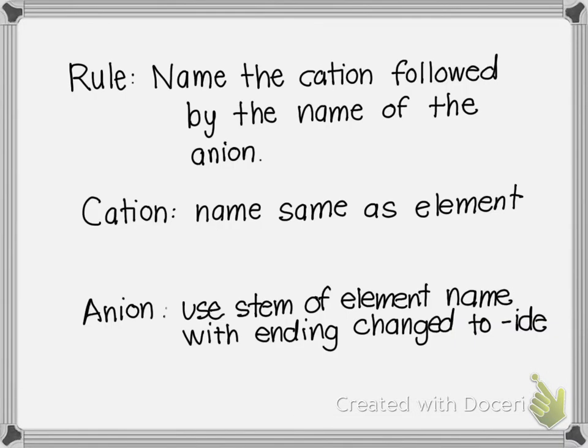So here's the rule. You name the cation followed by the name of the anion. So here's something with ionic compounds. All ionic compounds use this basic rule. We're going to name the cation followed by the name of the anion. In ionic compounds, we don't use prefixes or anything to indicate how many elements are present because in ionic compounds, the charges tell us the formula.